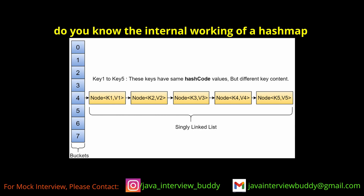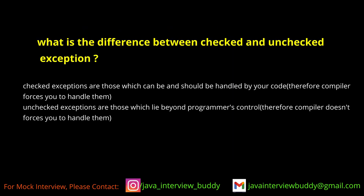What is the internal working of a HashMap? When we call the put method to add an element, the element's hash code value is calculated. That hash code value is divided by the default bucket capacity of 16, and based on the resulting index, the value is stored in the corresponding bucket number.